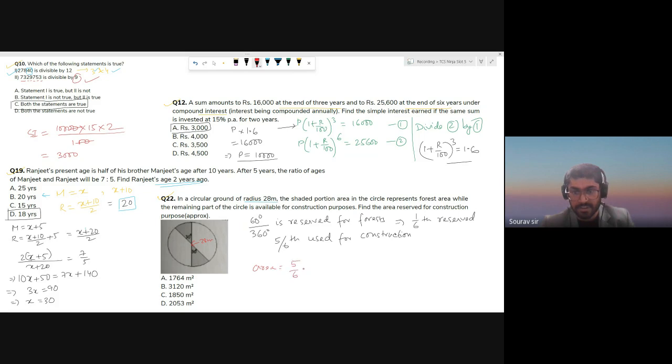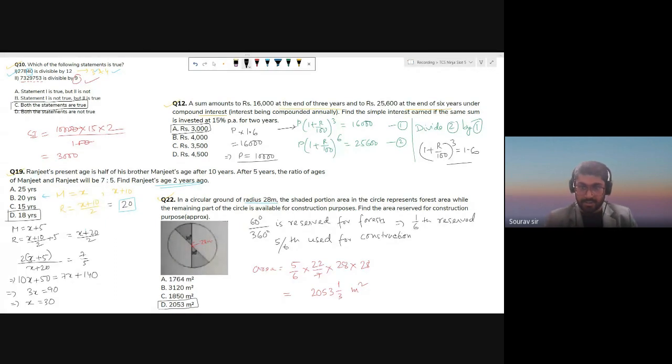So area would be 5 by 6 into π. Let's take π as 22 by 7 into r squared, 28 times 28. Use your onscreen calculator and you are going to end up with 2053 1/3 meter square. So they want to approximate the value, so then your answer will be option D, 2053 meter square.